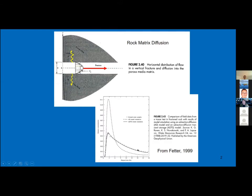In terms of breakthrough curves — the effluent concentration — what rock matrix diffusion tends to do is reduce the amplitude of the breakthrough curve and increase the time before you return to background levels. If you have a contaminant pulse, you have what's called transient storage. This is an important phenomenon if you're trying to understand the movement of contaminants, radioactive contaminants in particular.